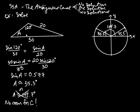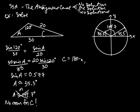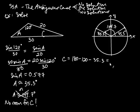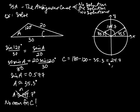Since A must be 35.3 degrees, we can find angle C. C equals 180 minus 120 minus 35.3, which gives C equal to 24.7 degrees. Let's verify: 120 plus 35.3 plus 24.7 equals 180. Yes, that checks out.